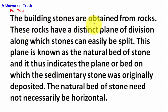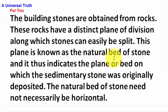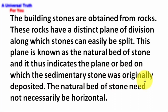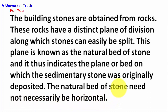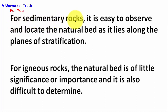The building stones are obtained from rocks. These rocks have a distinct plane of division along which stones can easily be split. This plane is known as the natural bed of stone, and it indicates the plane or bed on which the sedimentary stone was originally deposited. The natural bed of stone need not necessarily be horizontal. For sedimentary rocks, it is very easy to observe and locate the natural bed as it lies along the planes of stratification.